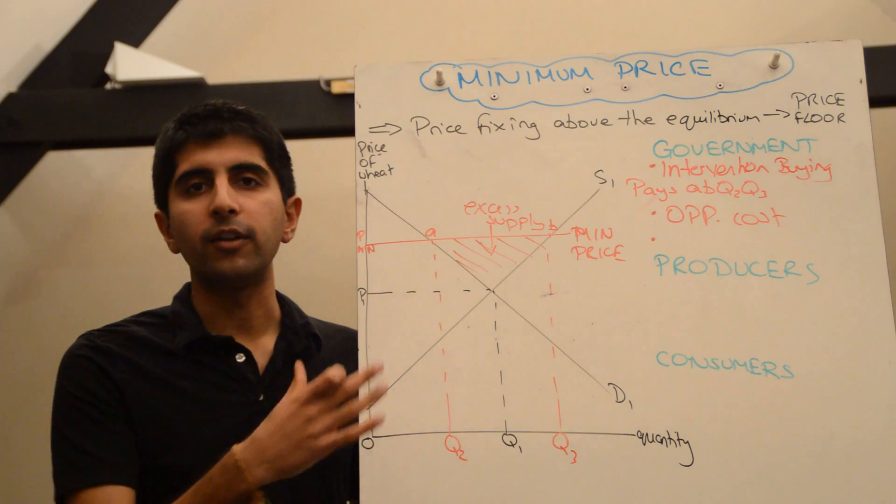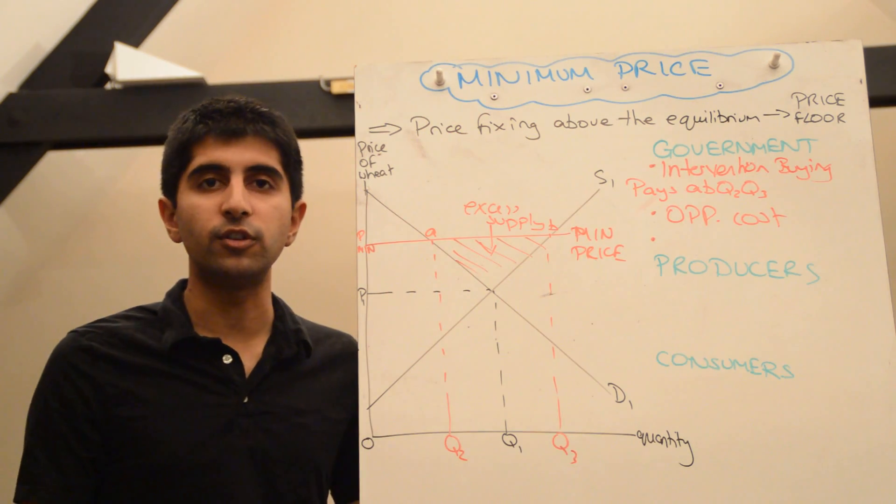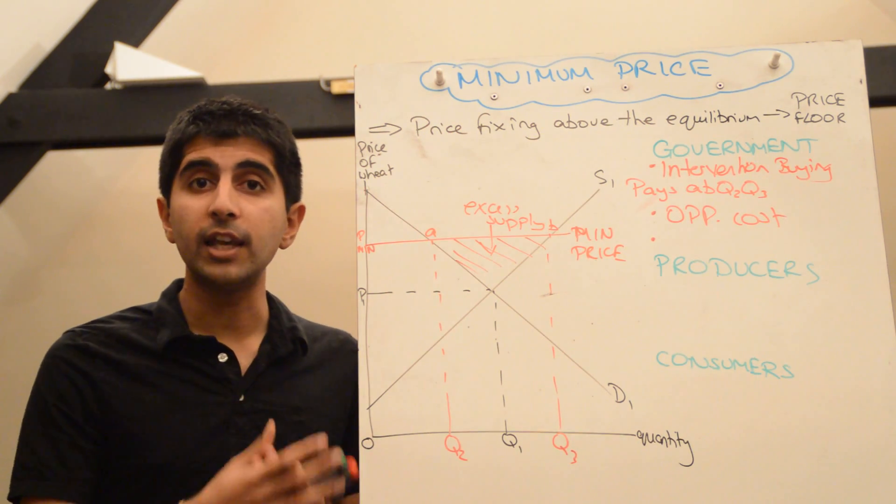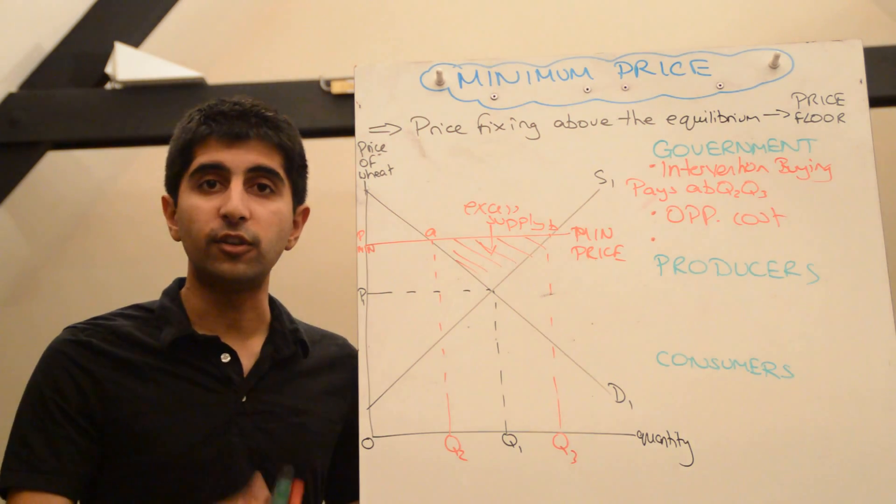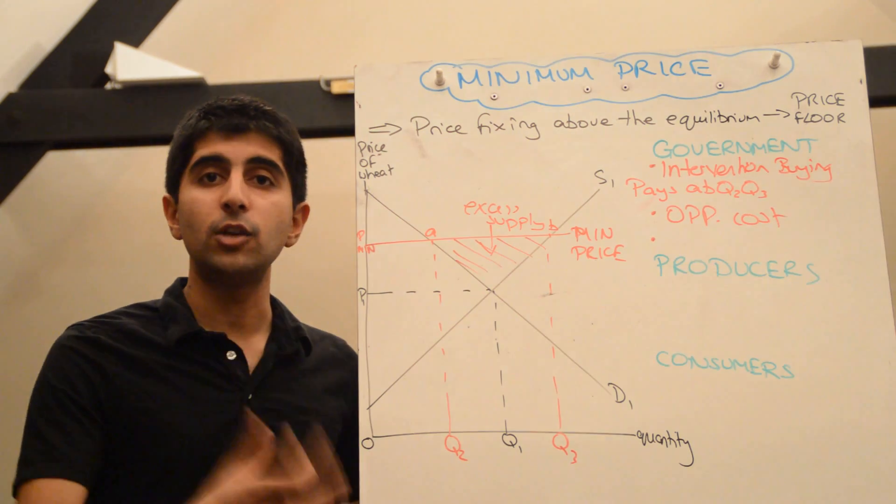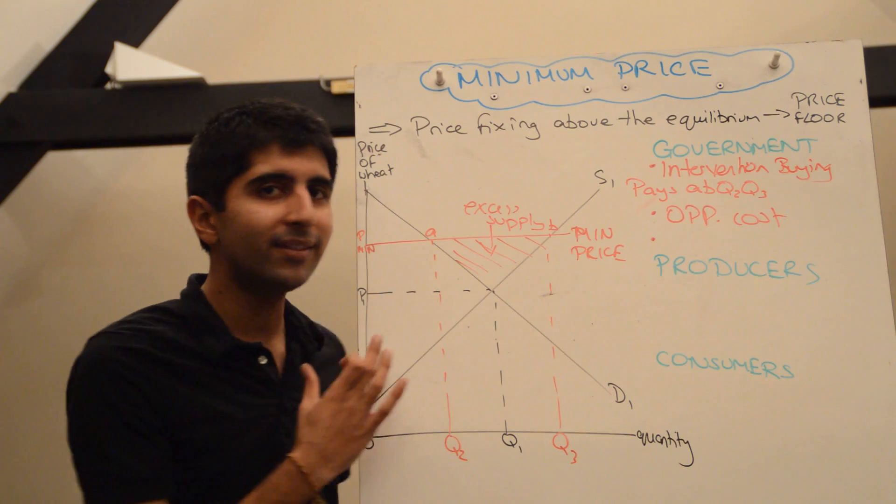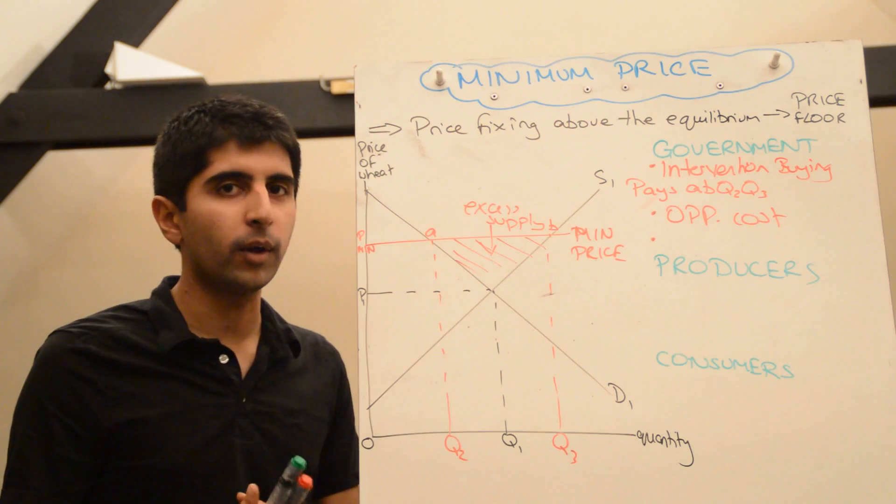Yes, there is a gain in setting a minimum price. You're protecting domestic producers. And there may be a value to the economy of domestic producers continuing to supply and continuing to exist. Fair enough. But if the cost outweighs that benefit, maybe this wasn't a worthwhile intervention.